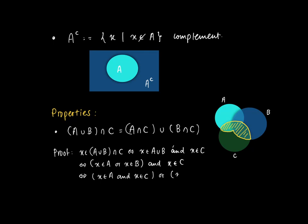Well, this is just equivalent with saying that x belongs to A intersect C or x belongs to B intersect C, or equivalently, x belongs to (A intersect C) union (B intersect C).